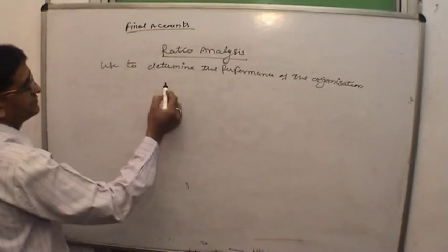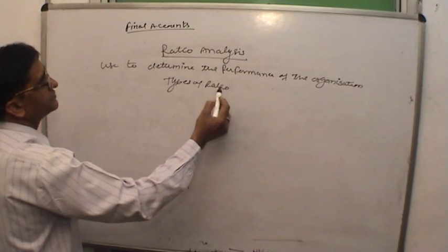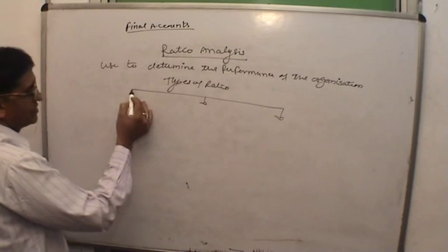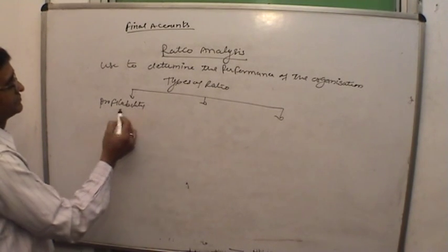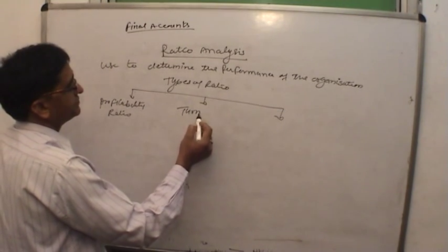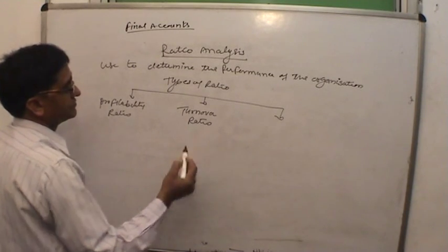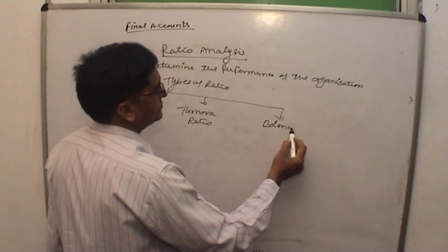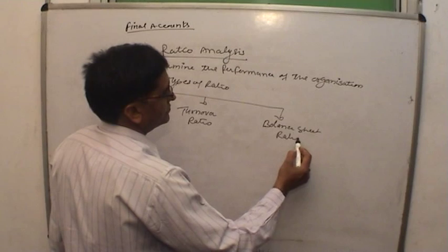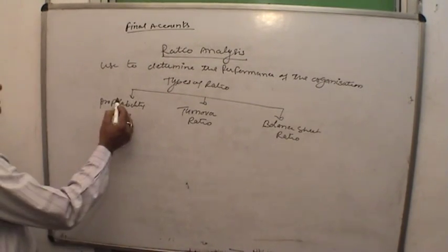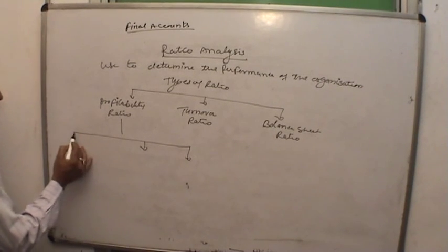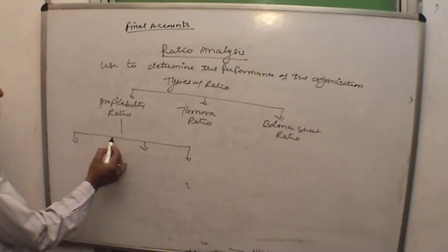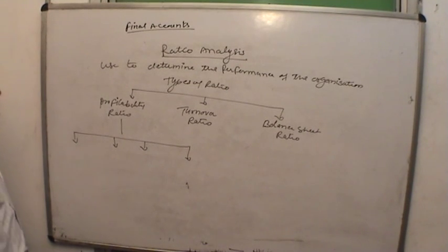There are three types of ratios: profitability ratio, turnover ratio, and balance sheet ratio. Balance sheet ratio is also known as composite ratio. Profitability ratios are further classified into different categories, including what is known as operating ratio.